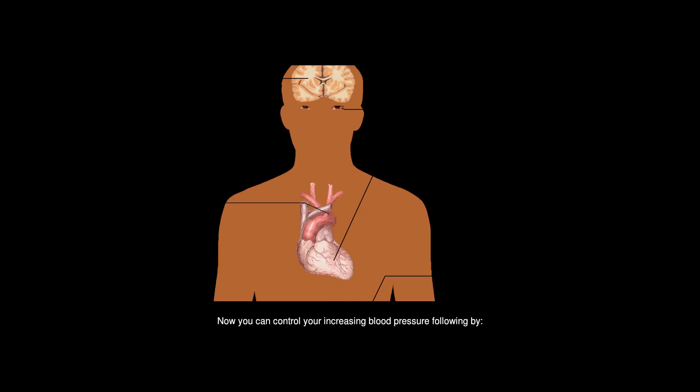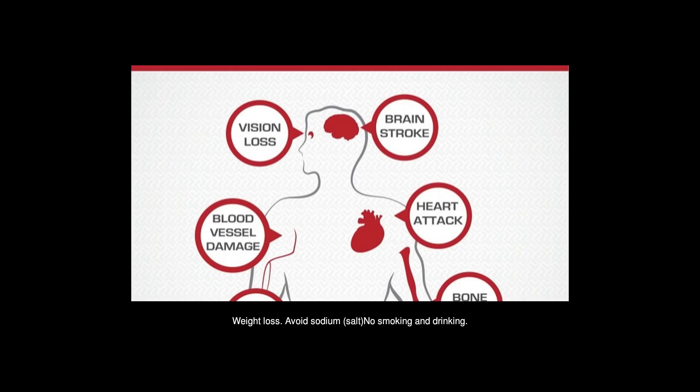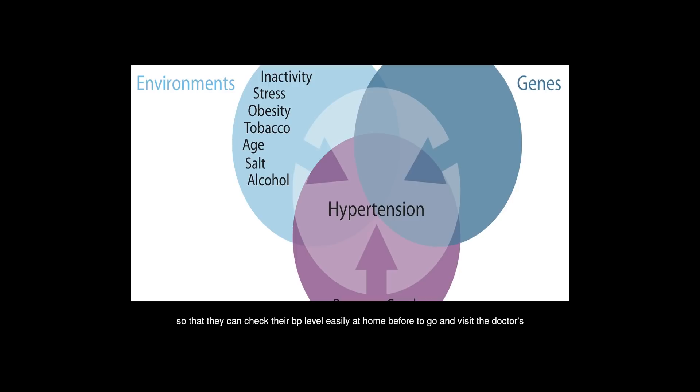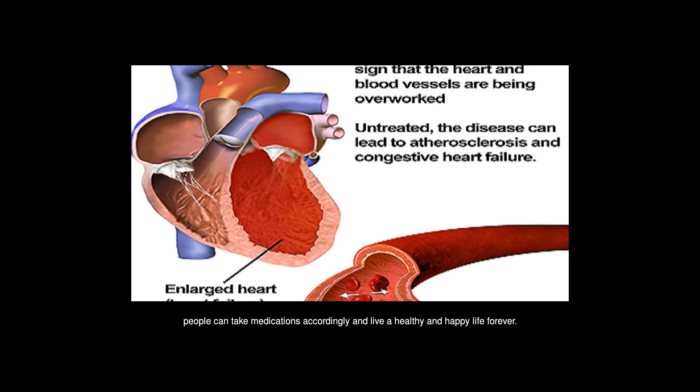But no need to worry at all. Now you can control your increasing blood pressure by following: healthy diet, regular exercise, weight loss, avoid sodium, salt, no smoking and drinking, reduce stress. Due to busy life, from hour to hour or even minute to minute, blood pressure level fluctuates. So in that case, most of the people are recommended to buy BP monitor for home, so that they can check their BP level easily at home before going to visit the doctor's office. Going through this, people can take medications accordingly and live a healthy and happy life forever.